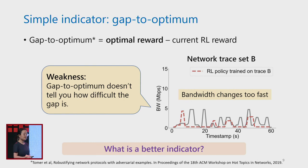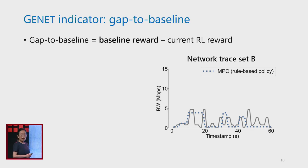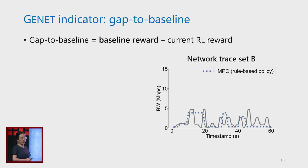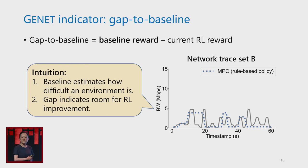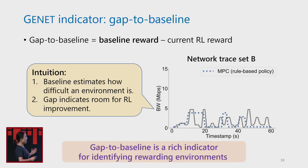In Genet, we propose a new indicator called gap to baseline, which is the difference between the baseline policy reward and the current RL reward. Looking at trace B again, MPC baseline also performs badly on these traces. Gap to baseline is good for two reasons: first, the baseline policy can estimate how difficult the environment is; second, the gap indicates the room for potential RL improvement. Therefore, gap to baseline is a richer indicator for identifying rewarding environments.